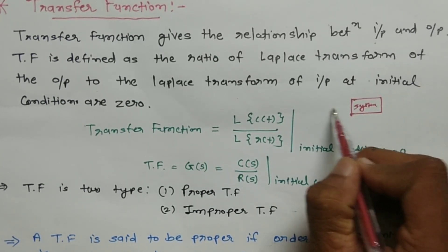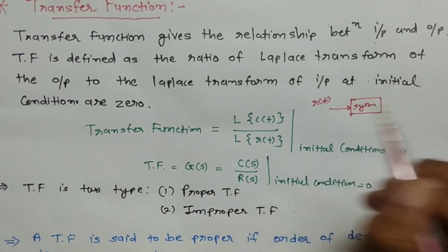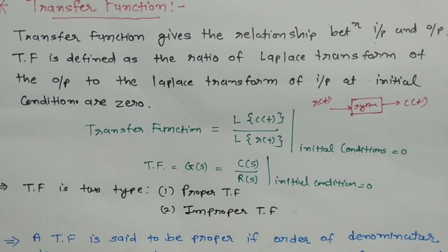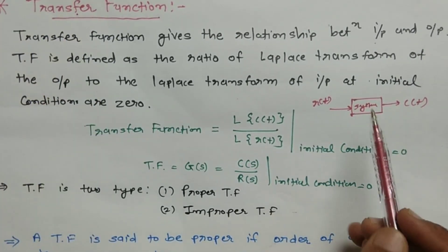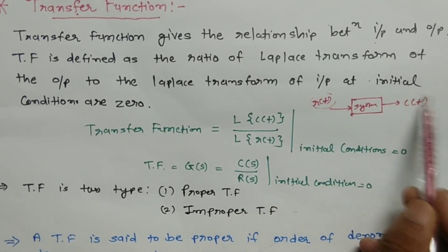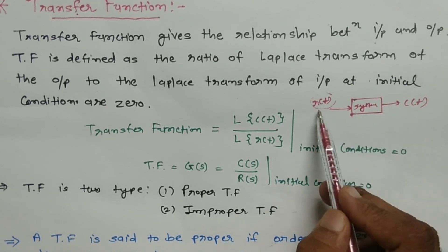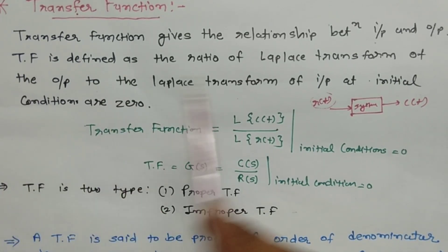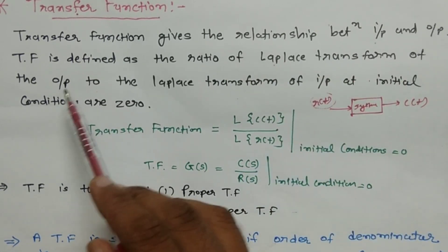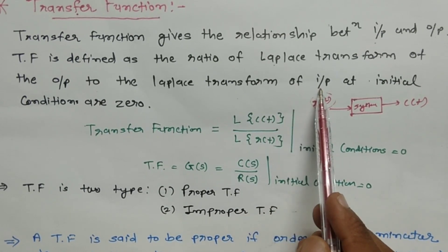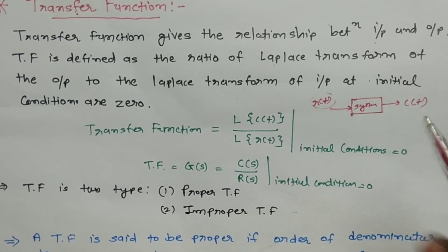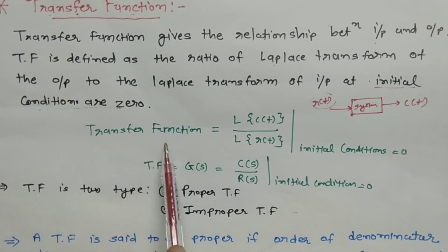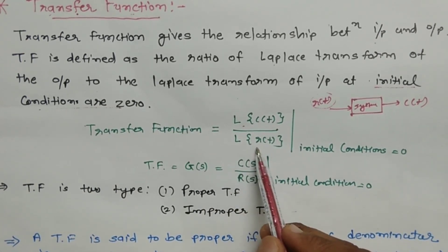If we take one system, its input is r(t) and output is c(t). The transfer function gives the relationship between input and output. The basic definition of transfer function is the ratio of the Laplace transform of the output to the Laplace transform of the input, with the assumption that initial conditions are zero.